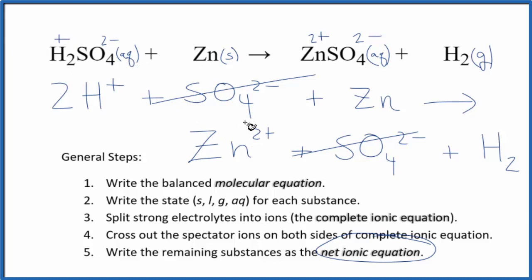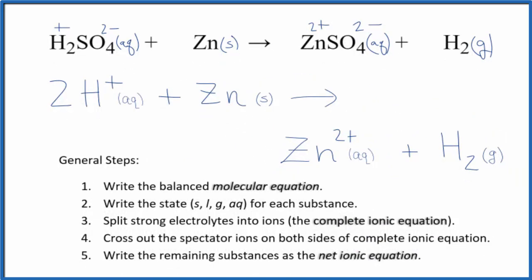Let me clean this up and add the states in. Then we'll have our net ionic equation for sulfuric acid plus zinc. Okay. And this is the net ionic equation for H2SO4 plus Zn.